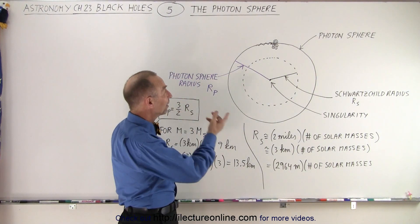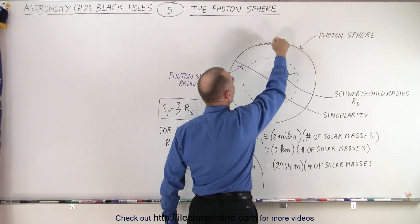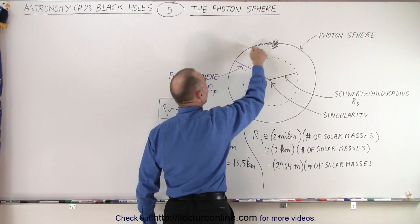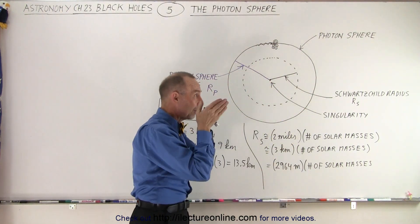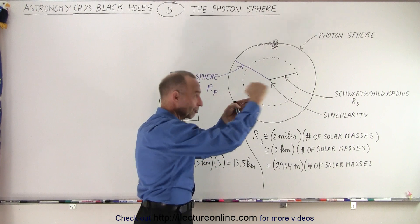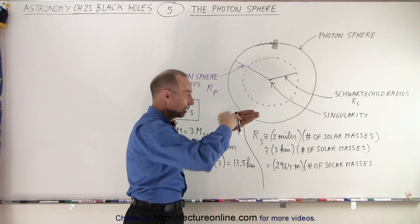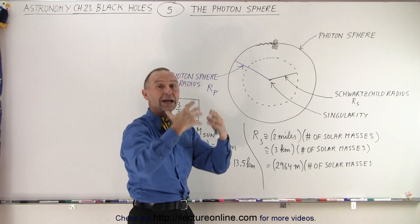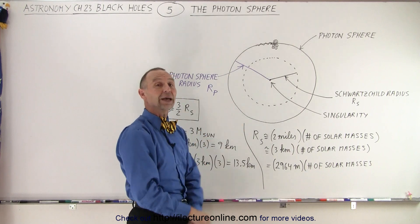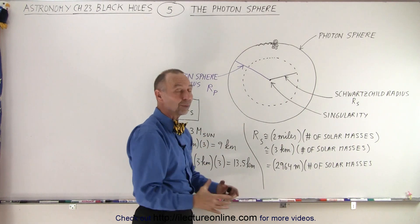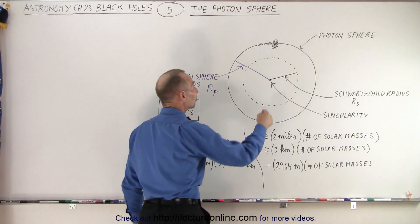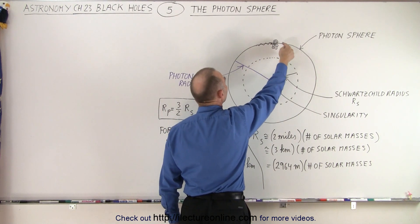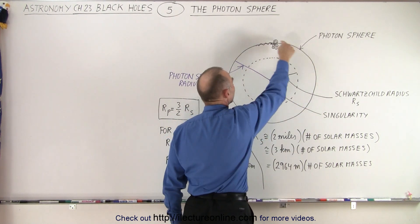Wow, interesting. And of course that light would reflect off the back of your head, come back this way, and you could actually see the back of your head by looking forward, because the light would travel all the way around, illuminate the back of your head, then bounce back and reflect back to you. That's what the photon sphere is — it's actually the place where you'd have to travel at the speed of light in order to go around the black hole.